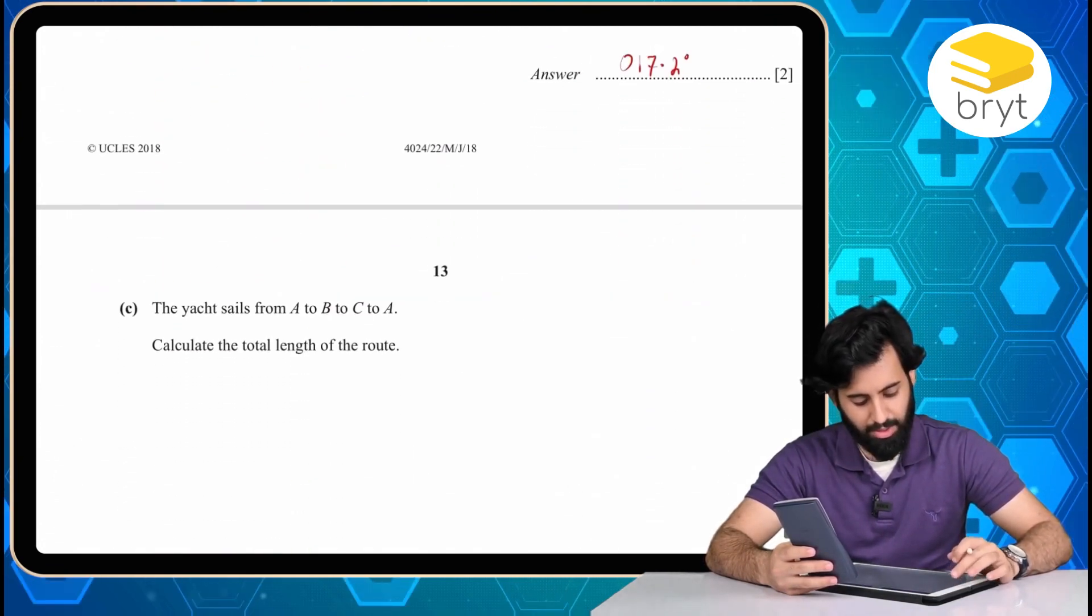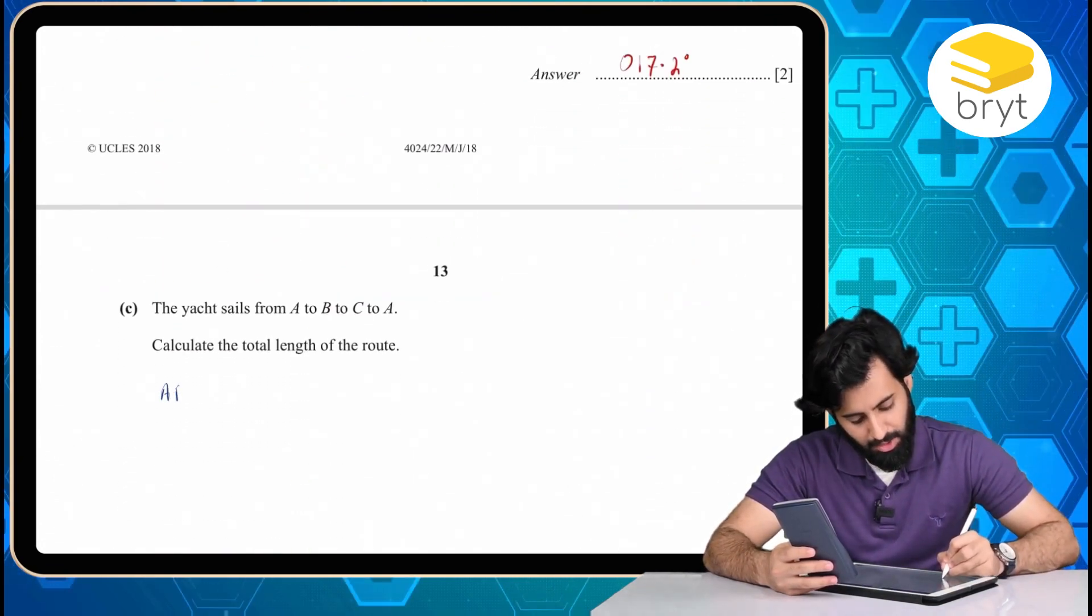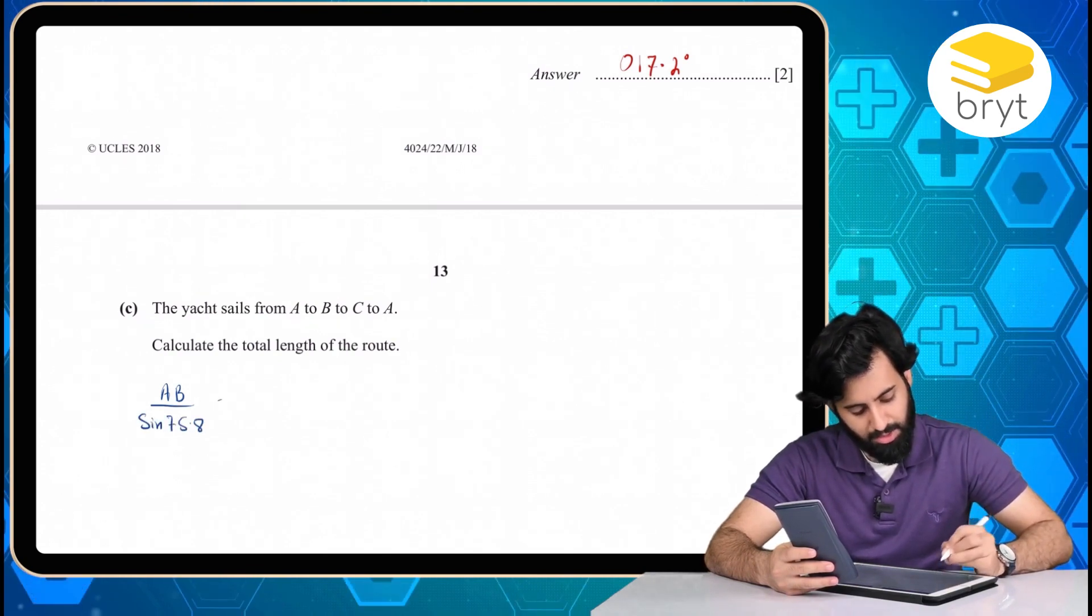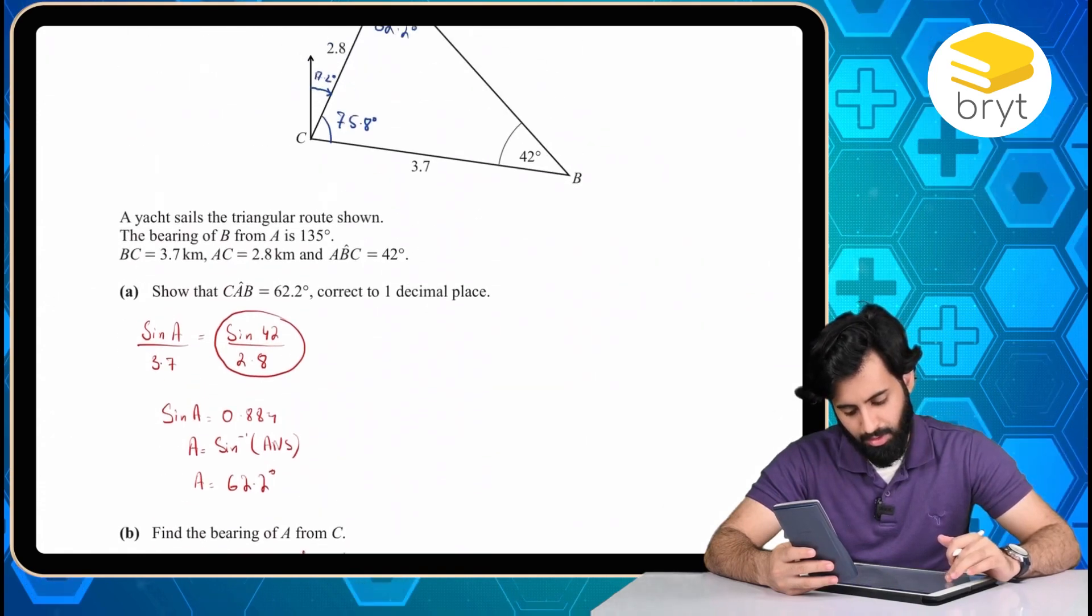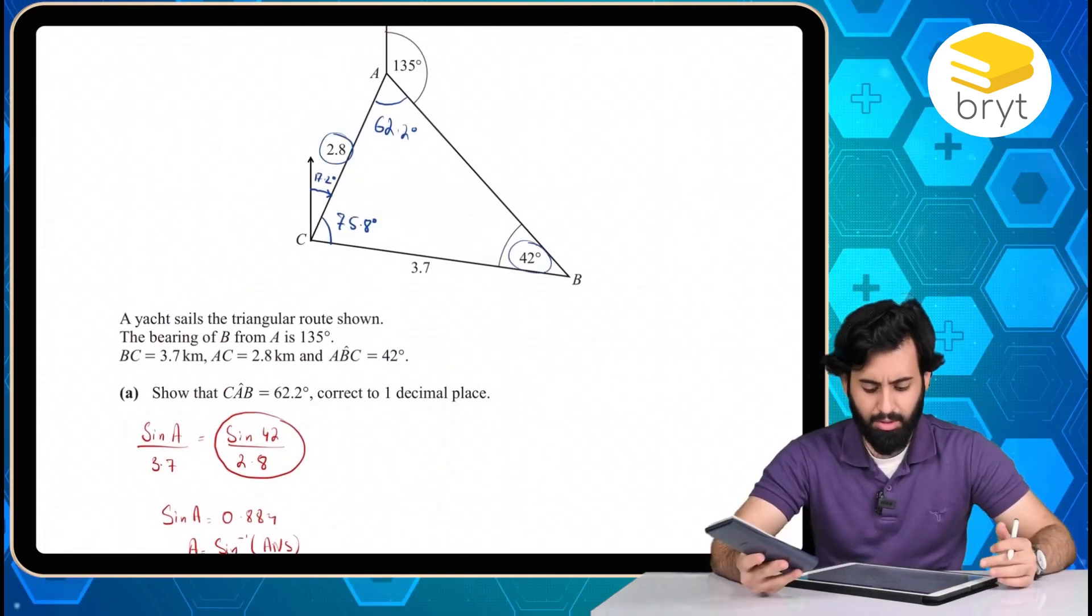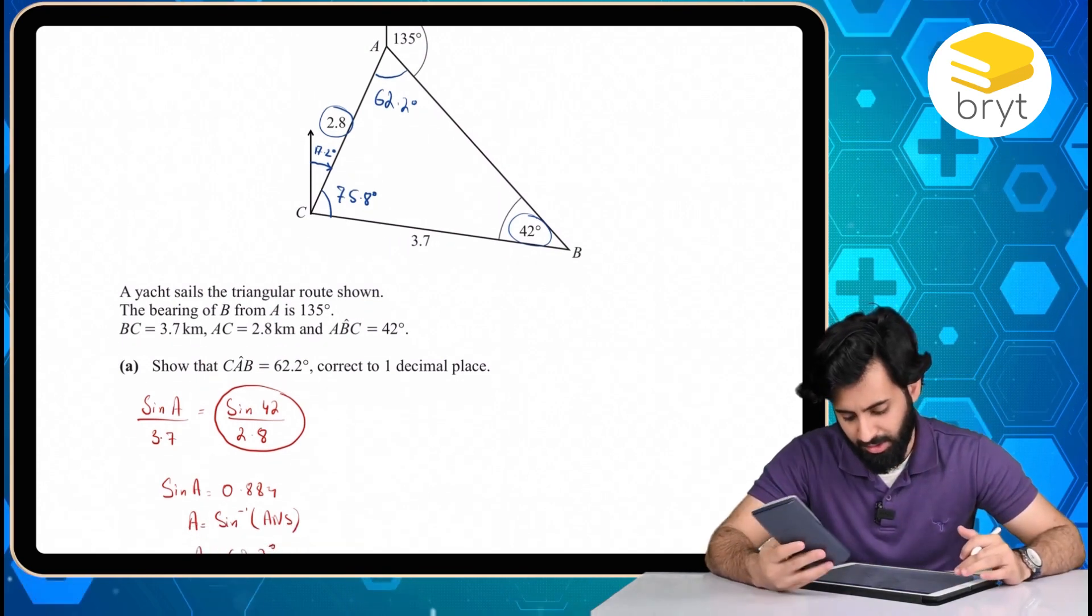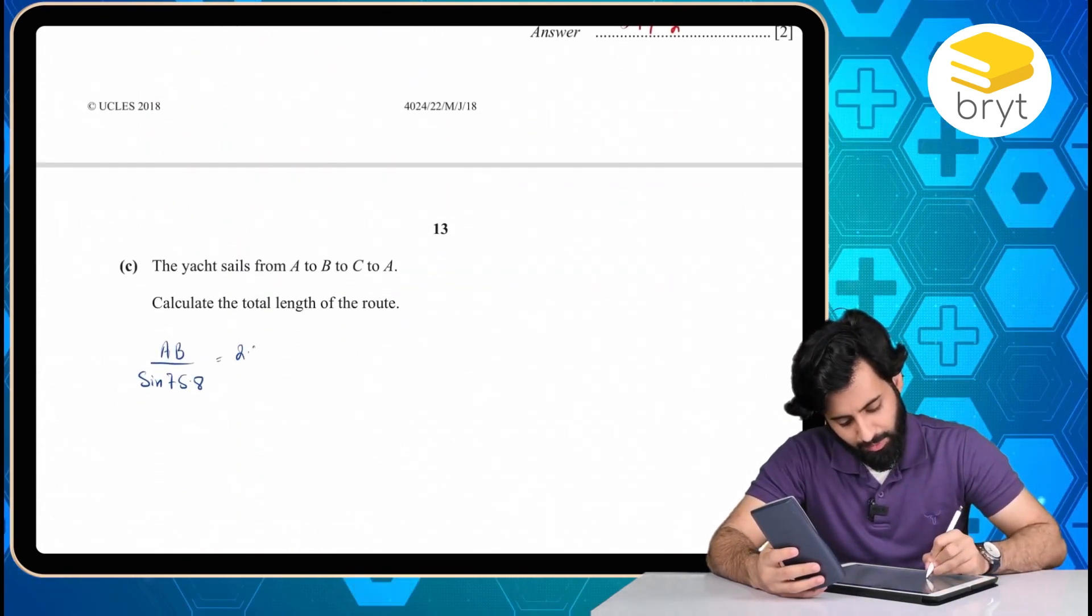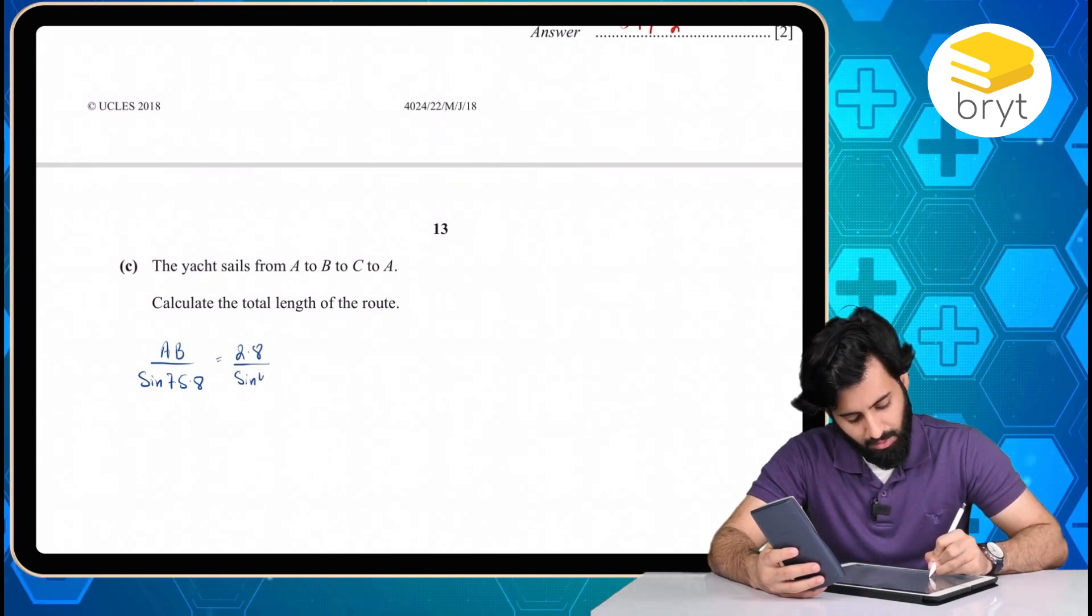Now, the first thing that I should do is work out the third and the missing angle. So 180 minus 62.2 minus 42 gives me 75.8. So here's what I need to do. The first thing is that I need to calculate AB. So I'm going to do AB divided by sine of 75.8. And with this, I need to use another length and an angle. So I'm going to go with 2.8 and 42 since they were provided to us in the question. So 2.8 divided by sine of 42.